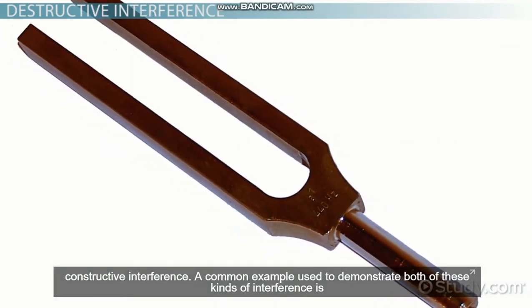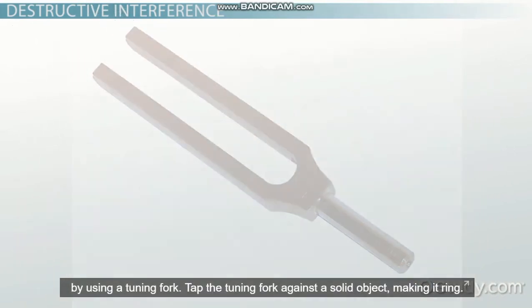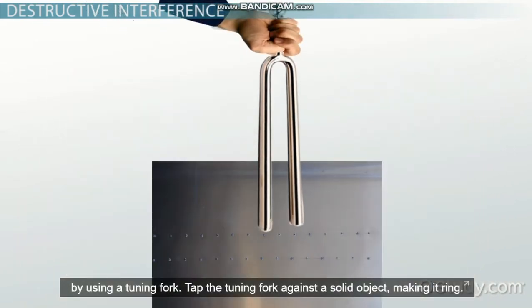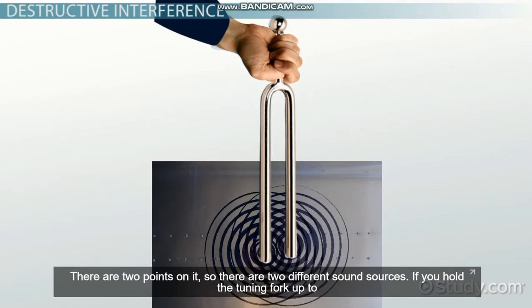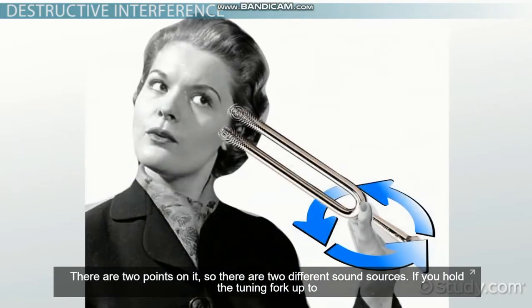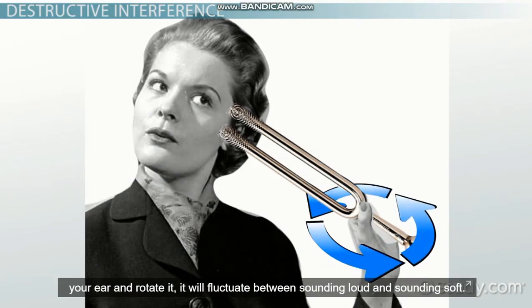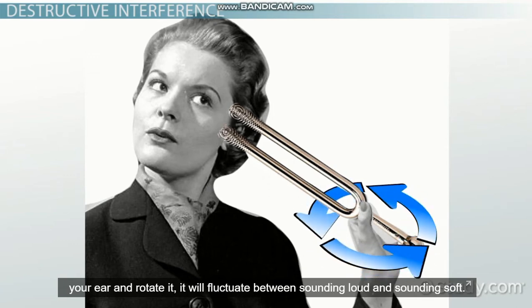A common example used to demonstrate both of these kinds of interference is a tuning fork. Tap the tuning fork against a solid object, making it ring. There are two points on it, so there are two different sound sources. If you hold the tuning fork up to your ear and rotate it, it will fluctuate between sounding loud and sounding soft.